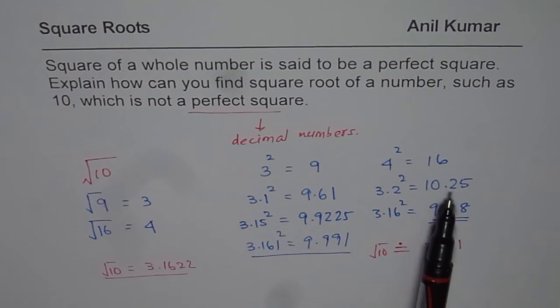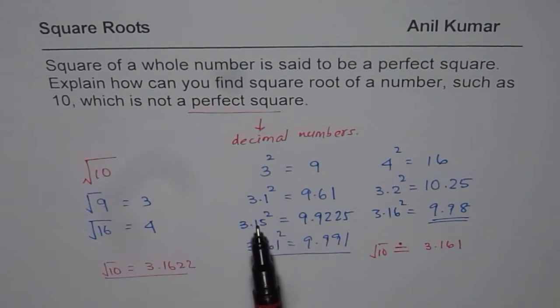If you get higher than 10, then you find a value which is slightly lower. So, that is the way you can estimate fairly accurately the square root of a number which is not a perfect square. I hope that helps.